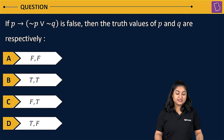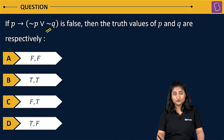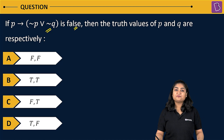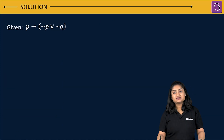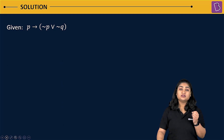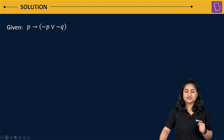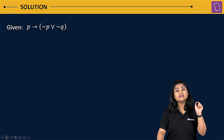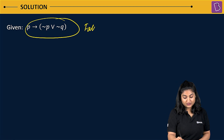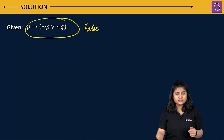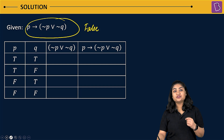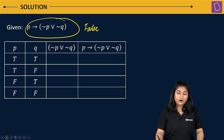In this question, we have been given the Boolean expression P implies negation of P or negation of Q, and it has been given that the truth value of this Boolean expression is false. We have to find out the truth values of P and Q respectively. We will make the truth table, starting with different combinations of P and Q, then calculating the truth values of negation of P or negation of Q, and finally finding P implies negation of P or negation of Q.